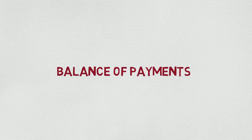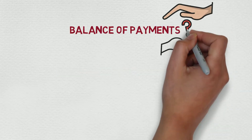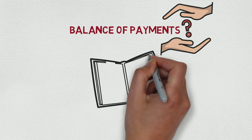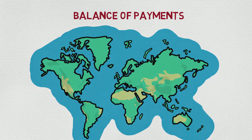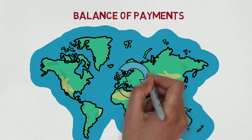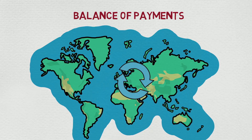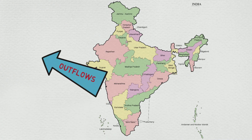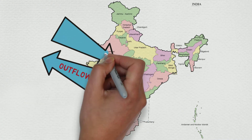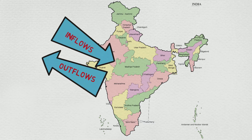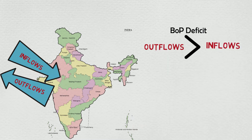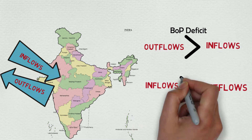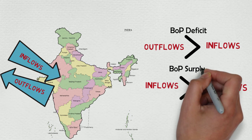With all the basics covered in the previous videos, we are now ready to discuss balance of payments. Balance of payments is nothing but a record of all the transactions a country makes with the rest of the world — that is, a record of all the money going out and money coming in. Money going out is called outflows or payments, and money coming in is called inflows or receipts. If financial outflow is more than inflow, we call it a balance of payment deficit, and if inflow is more than outflow, we call it a BOP surplus.